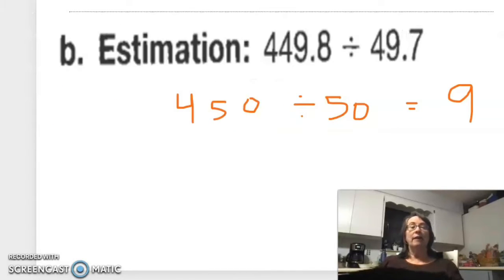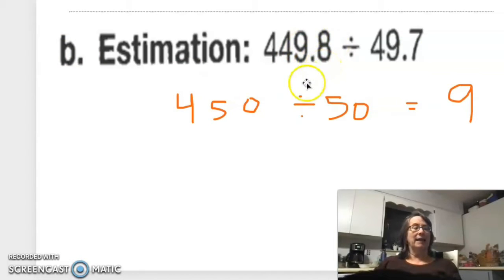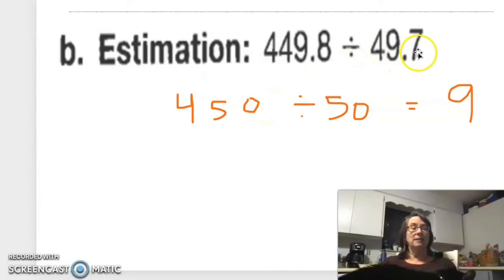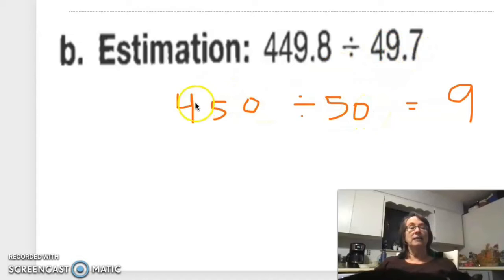For estimation when we are dividing, we want to estimate. On this one I estimated by 50s: 449.8 is close to 450, and 49.7 is close to 50, so 450 divided by 50 — we can just cancel those zeros off.